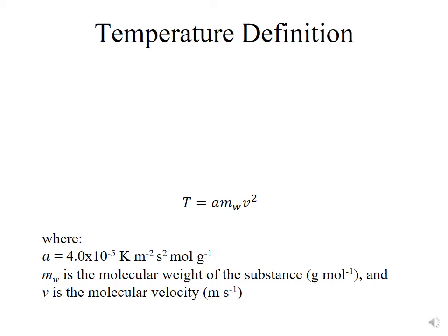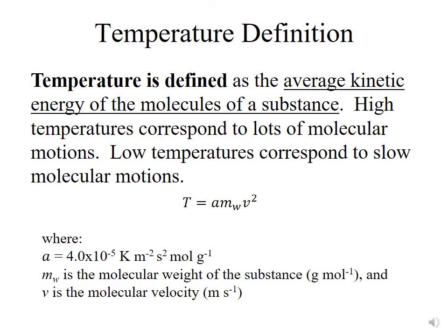Let's start off with a temperature definition. Temperature is defined as the average kinetic energy of the molecules of a substance. So it really has to do with how quickly the molecules are vibrating or moving around. We have an equation here, T equals A times mw times v squared. A is a constant, mw is the molecular weight of the substance in grams per mole, and v is the molecular velocity in meters per second. Because this is a kinetic energy, the temperature is proportional to the velocity squared.